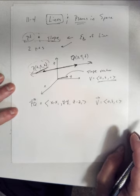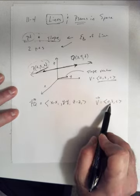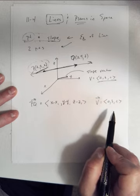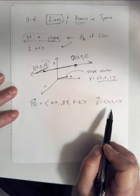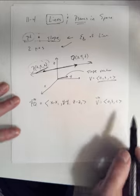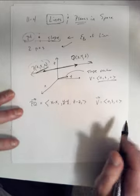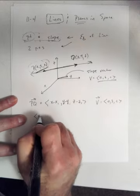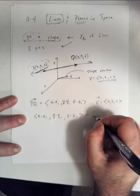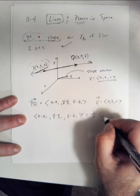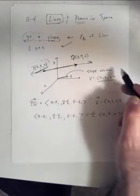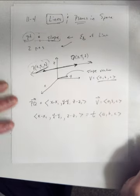Here's what we know: this vector PQ and slope vector V are parallel, which means they are scalar multiples of each other. From lesson 2-3-2, two vectors in space that are scalar multiples are parallel. These have to be parallel because this line has to follow the same direction as the slope vector.